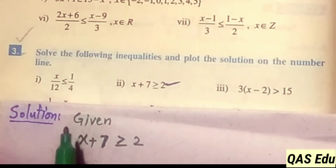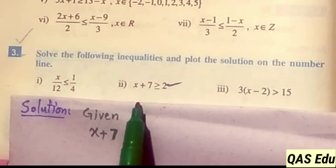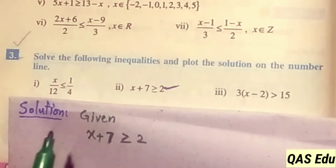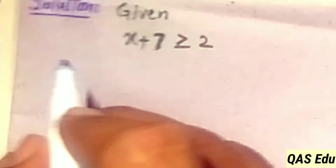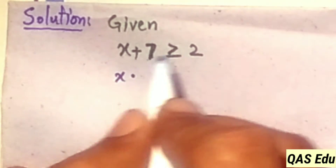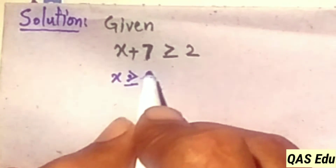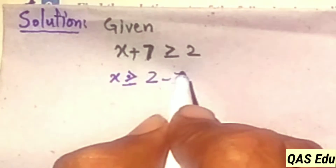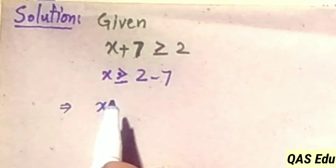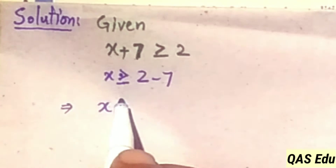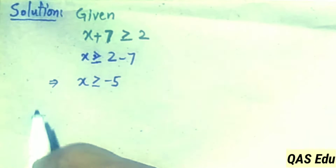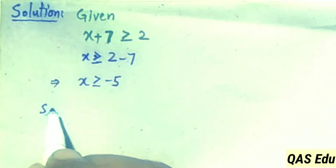Part number two: x plus 7 is greater than or equal to 2. Moving plus 7 to the right side of the inequality, it becomes minus 7. So x is greater than or equal to 2 minus 7, which gives x greater than or equal to minus 5.